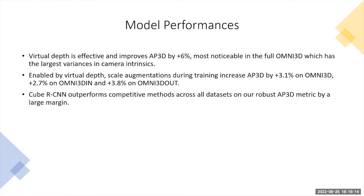Because of the virtual depth concept, we used scale augmentation. By doing so, we increased the training accuracy by 3.1 percent in the Omni3D dataset and 2.7 percent on Omni3D indoor and outdoor. The Cube R-CNN model is the best model that outperforms all competitive existing methods for detecting 3D objects.